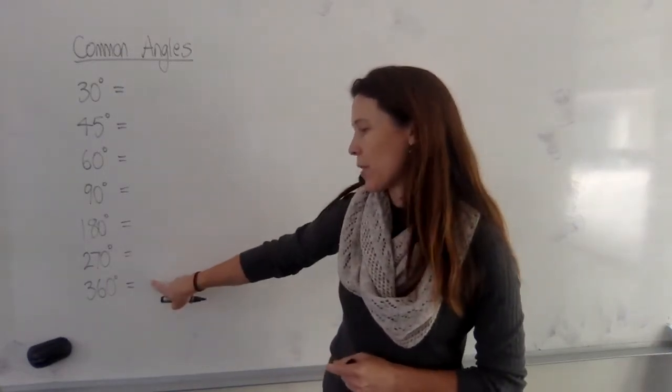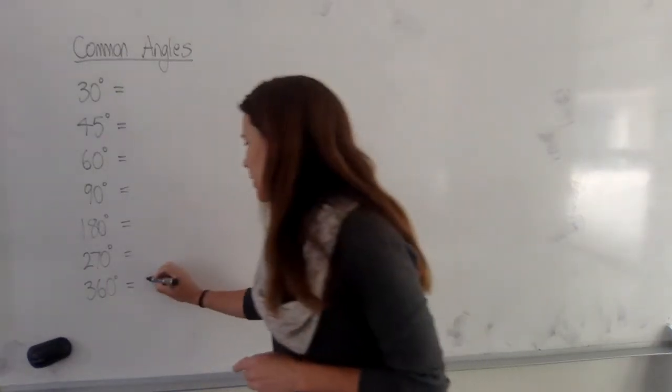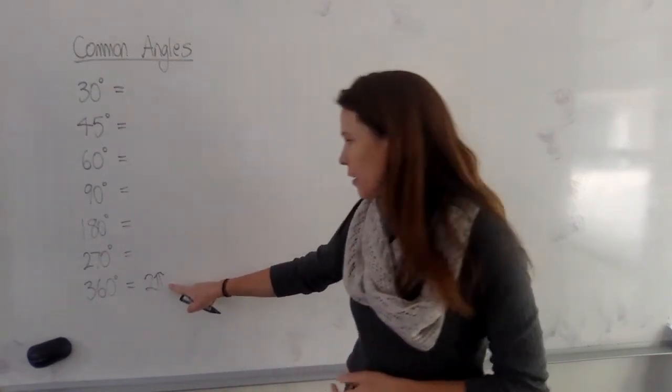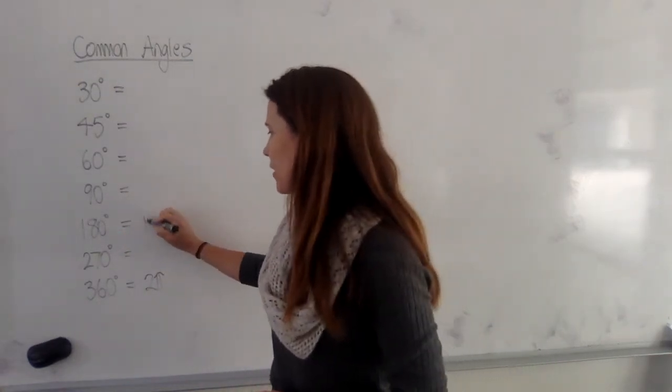Now, starting from the one that we know best, 360 degrees is 2 pi. That's something that we always keep in mind. And obviously 180 degrees is pi.